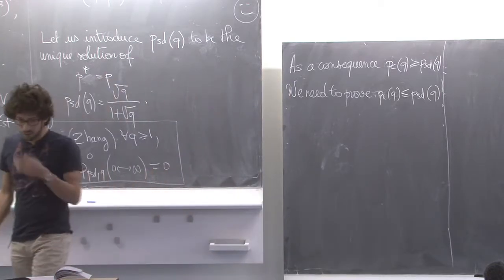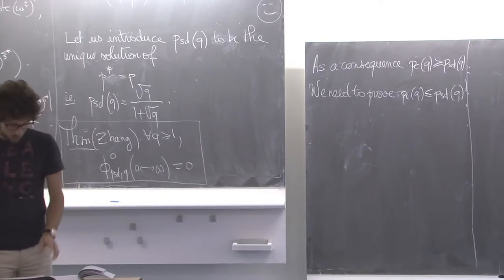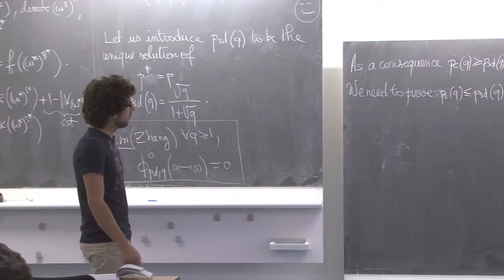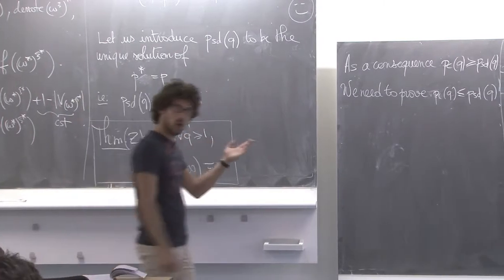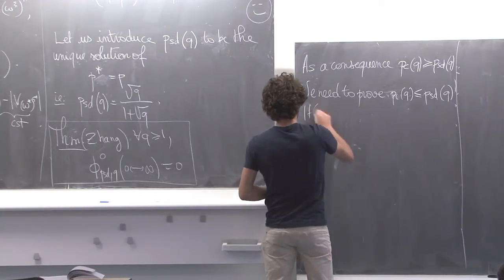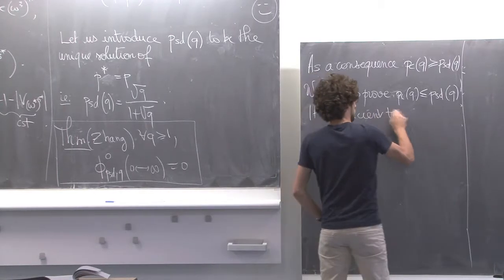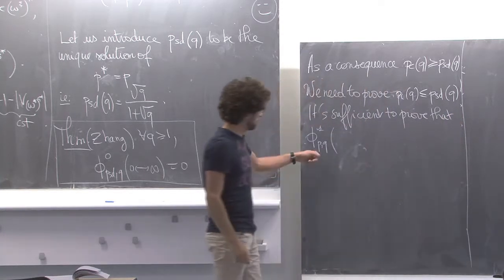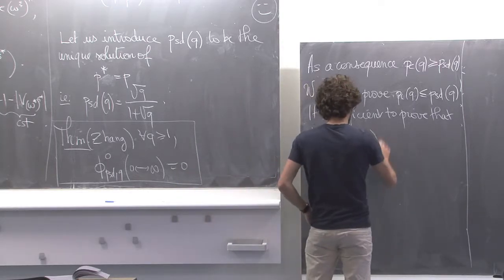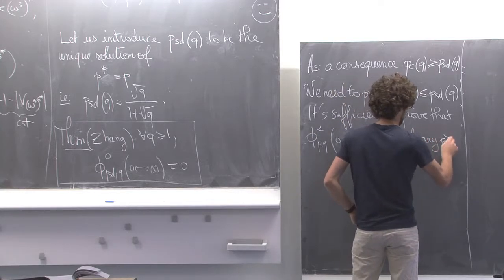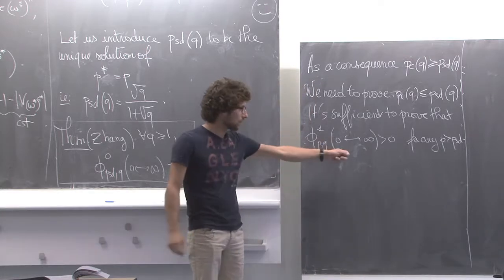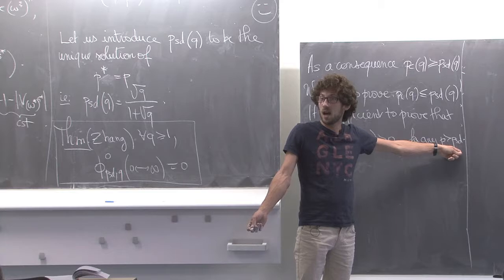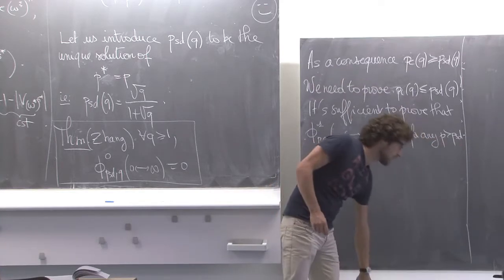We need to prove the other inequality P_c ≤ P_sd. And if we had exponential decay it would be easy, but we don't. Our aim: it's sufficient to actually prove that for whatever P larger than P_sd, 0 is connected to infinity with positive probability. Because that means P is larger or equal to P_c, and if this is true for any P larger than P_sd, then P_c has to be smaller or equal to P_sd.